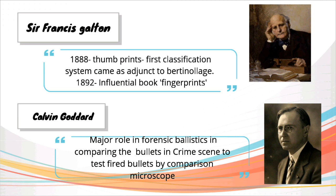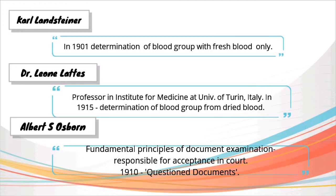Coming to Calvin Goddard — he played a major role in forensic ballistics. He explained how to determine whether a particular gun had fired a bullet or not. What he did was compare the bullet emitted from the suspect's weapon to that of a test-fired bullet with the help of a comparison microscope.